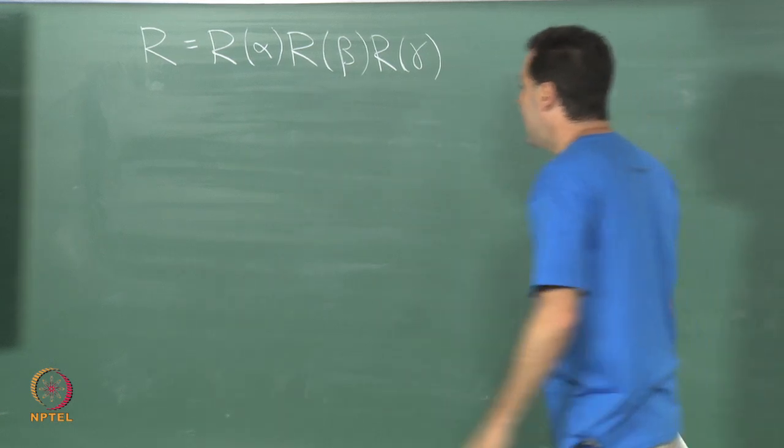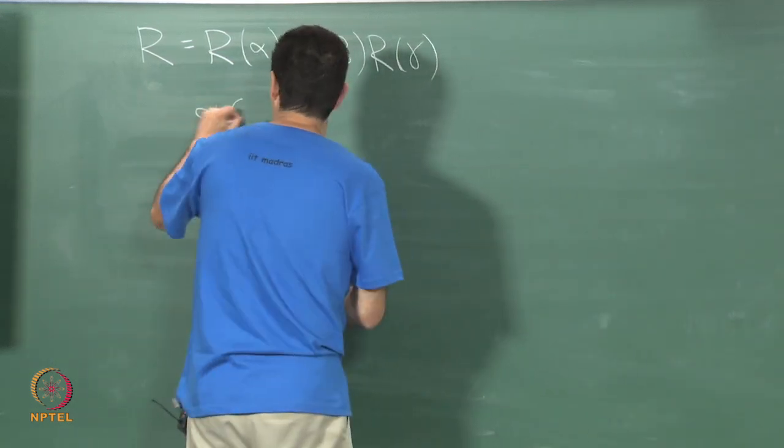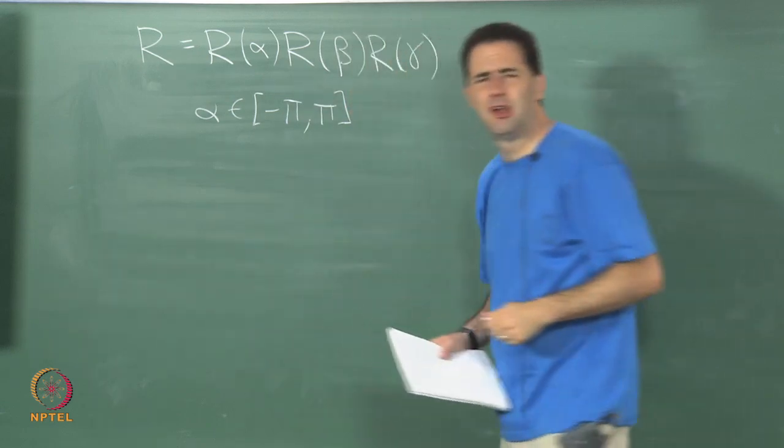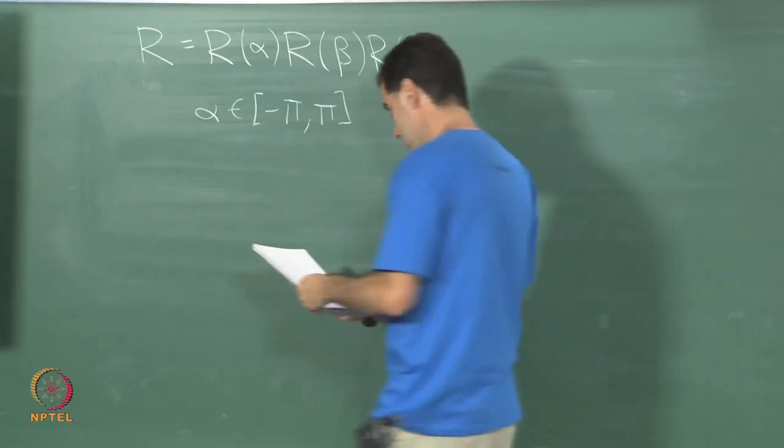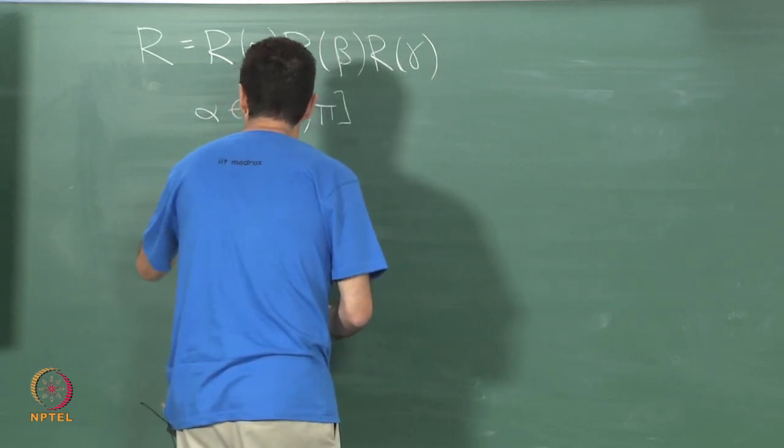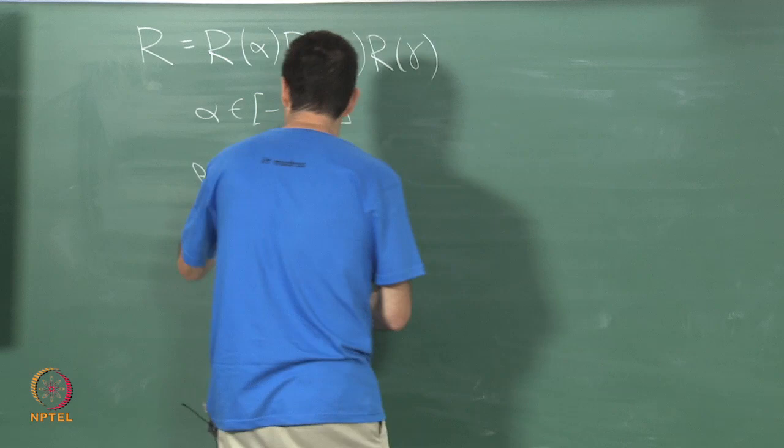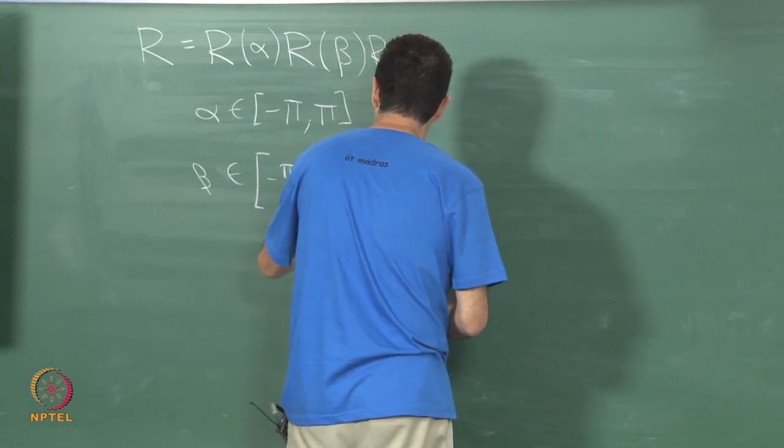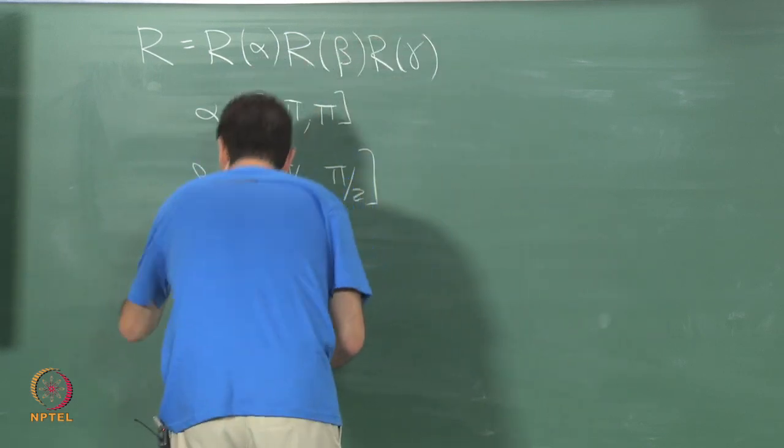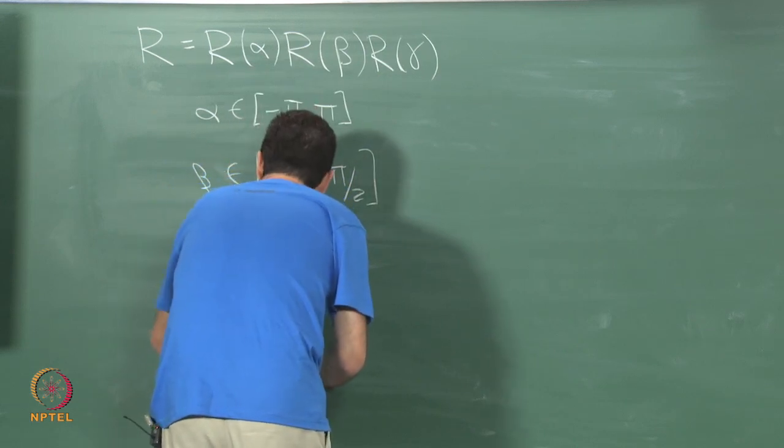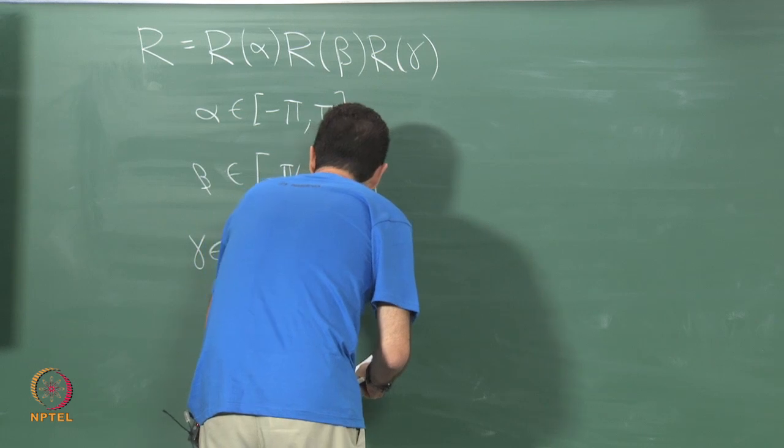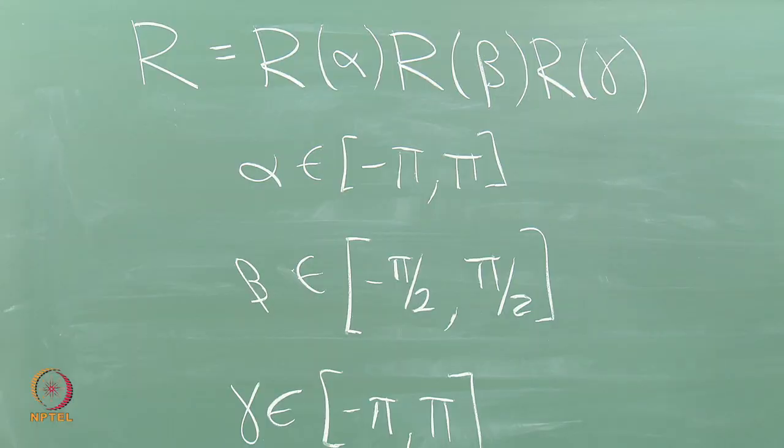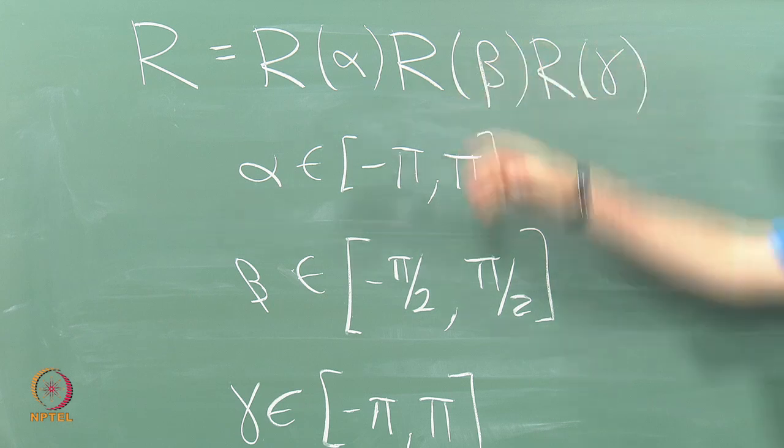You end up with a result, and if we constrain alpha to be between minus pi and pi, alternatively 0 to 2 pi if you do not like negative angles, and beta to be between minus pi over 2 and pi over 2, and gamma to be between minus pi and pi again, if we impose these constraints then we can still reach every possible 3D rotation by picking some alpha, beta and gamma and applying these rotations together in a chain.